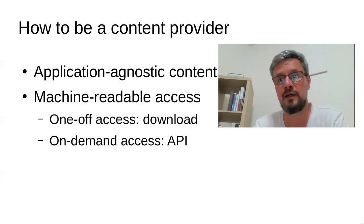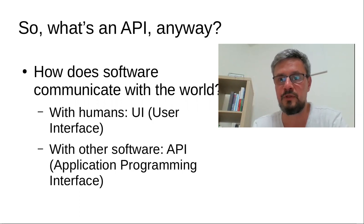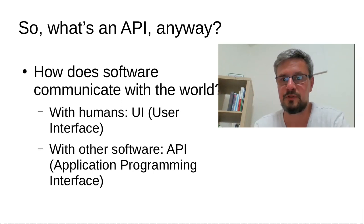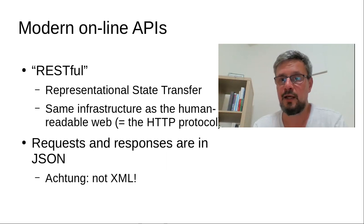That's not stopping many dictionary publishers from trying anyway, and one of the ways they're doing that is offering APIs which provide on-demand access to their data for customers in machine-readable formats. What is an API? An API is like a user interface, but not between humans and machines — it's an interface between two machines or two pieces of software. A user interface consists of the things you see on screen, text boxes you type into, and so on — that's how humans communicate with software. When two pieces of software communicate with each other, they use an API, an application programming interface. APIs have been becoming very popular on the internet over the last decade or so.